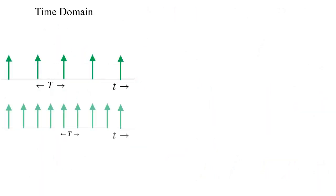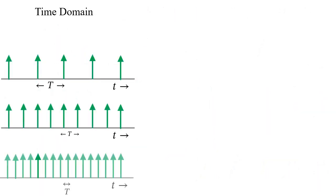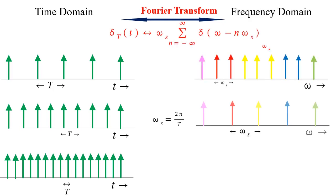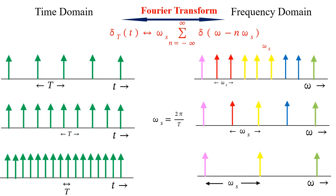If in the time domain we keep on reducing the space between the impulses in the impulse train, the spacing between impulses in the frequency domain increases. Each of these impulses convolves with the spectra X(omega), so the spacing between the spectras also increases with decrease in the sampling duration, or equivalently with increase in the sampling rate.